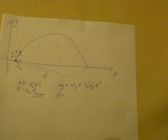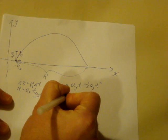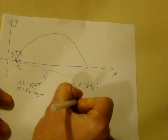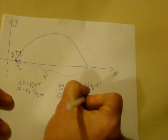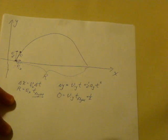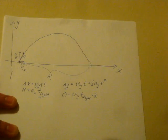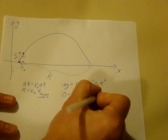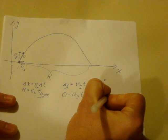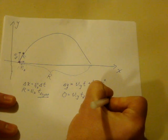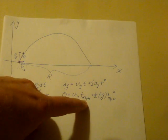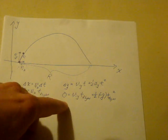So we have the initial velocity in the Y direction times our total flight time, the time of the flight, plus one-half times the acceleration in the Y direction. We know the acceleration in the Y direction for this particular problem is negative g, because we're counting positive y as up. So that's negative g times the flight time squared, and zero on this side.